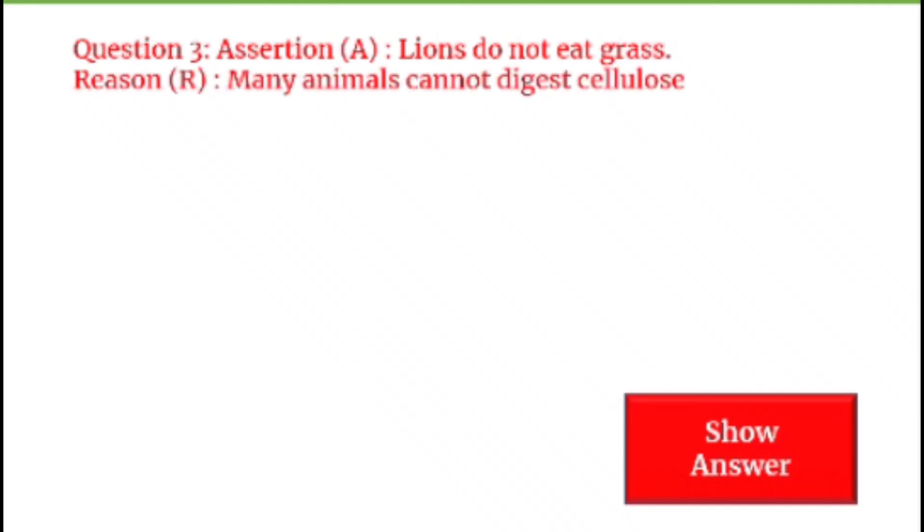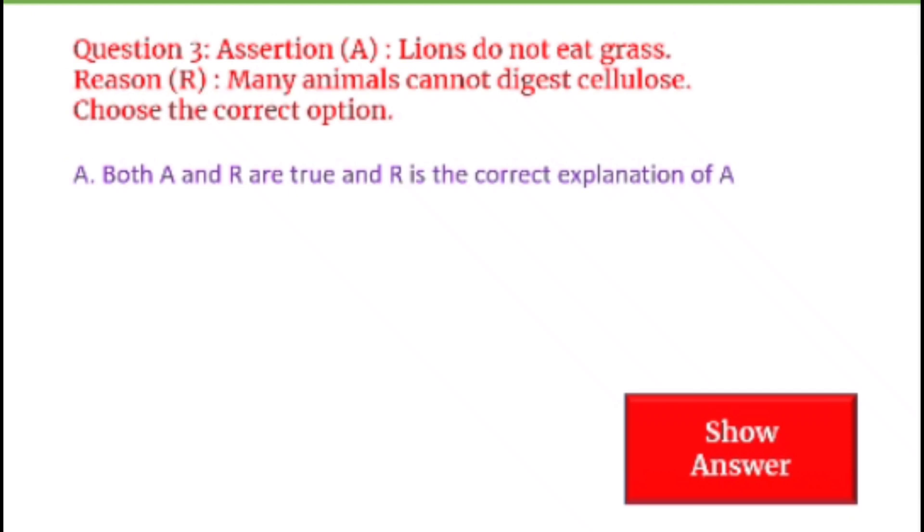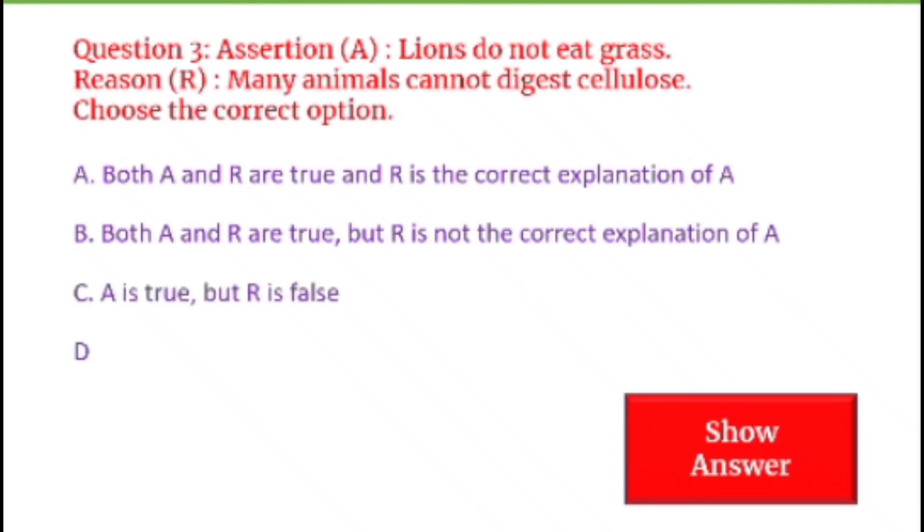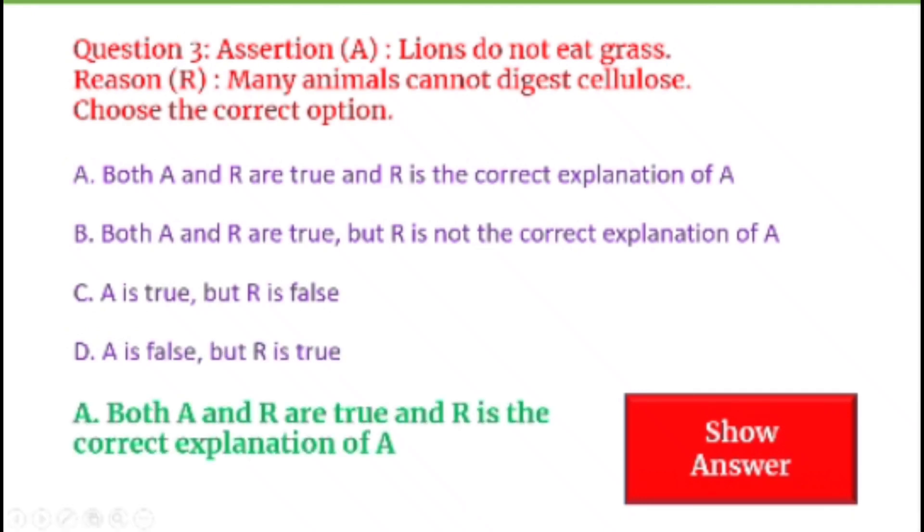Next question on your screen, question number 3. Assertion A: Lions do not eat grass. Reason: Many animals cannot digest cellulose. Choose the correct option. Option A: Both A and R are true, and R is the correct explanation of A. Option B: Both A and R are true, but R is the incorrect explanation of A. Option C: A is true but R is false. Option D: A is false but R is true. So let's see what is the answer. Option A is the correct answer of this question. Both A and R are true, and R is the correct explanation of A.